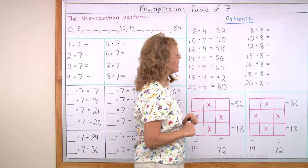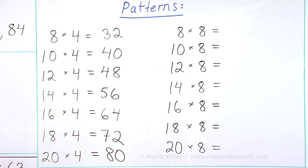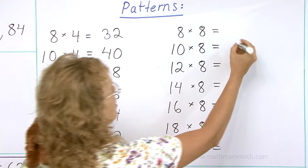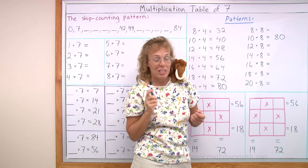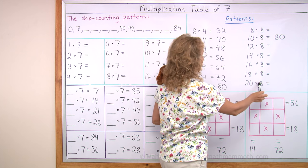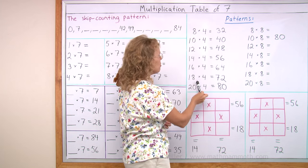This looks more difficult, right? Eight times eight, ten times eight. Well, ten times eight, you know. But now we can compare all these times eight with these times four.